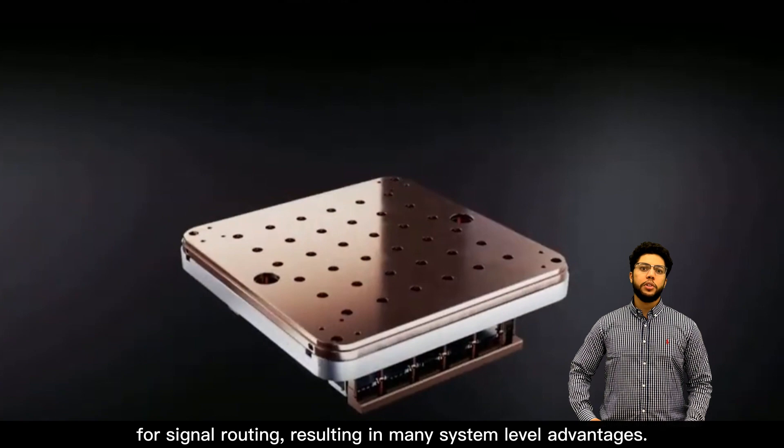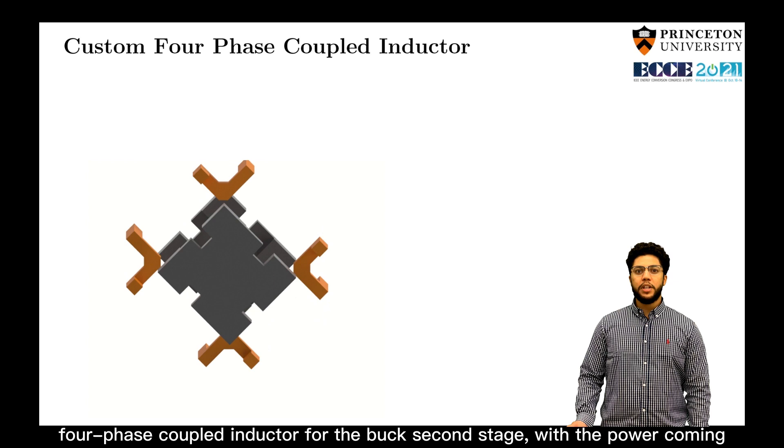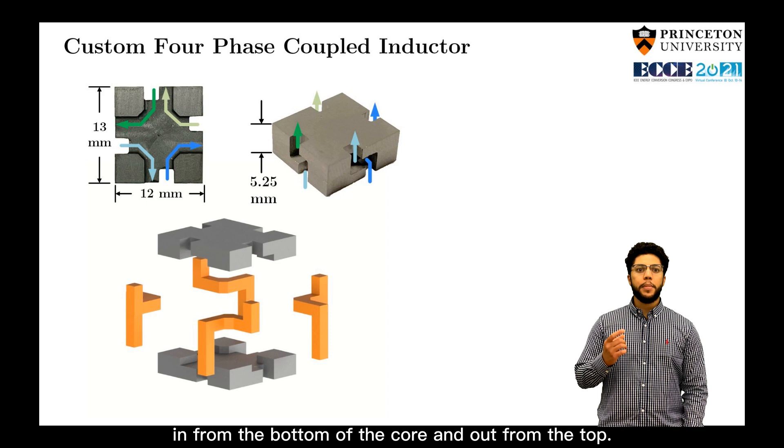So to enable vertical power delivery, we developed a customized four-phase coupled inductor for the buck second stage with the power coming in from the bottom of the core and out from the top. It has a very small footprint and leverages the well-known benefits of multi-phase coupling.